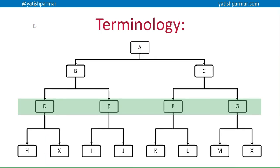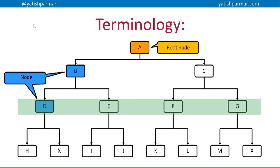There's a bit of terminology you need to know here. First of all, you have the root node at the top. Those are just called nodes. B is a parent of D, and the highlighted rectangle is a layer. H, I, J, K, L, M — they're all leaves, or terminal nodes, because they're at the end of the branch.